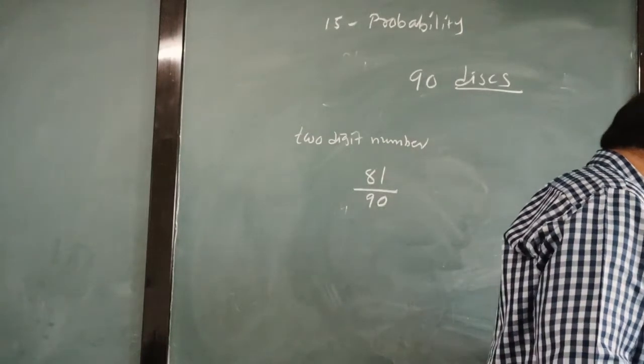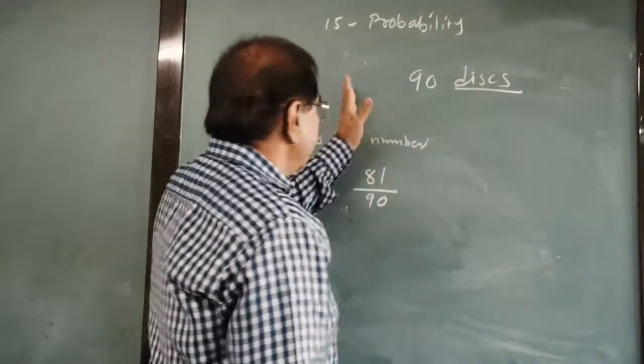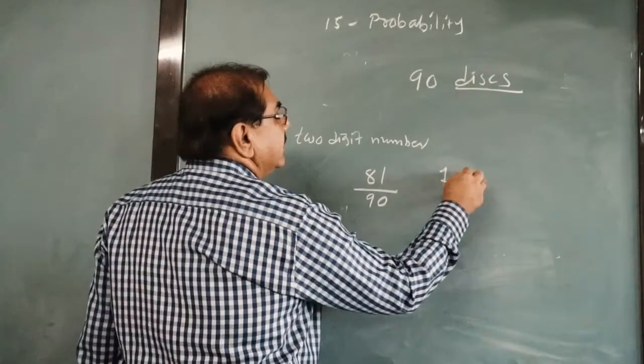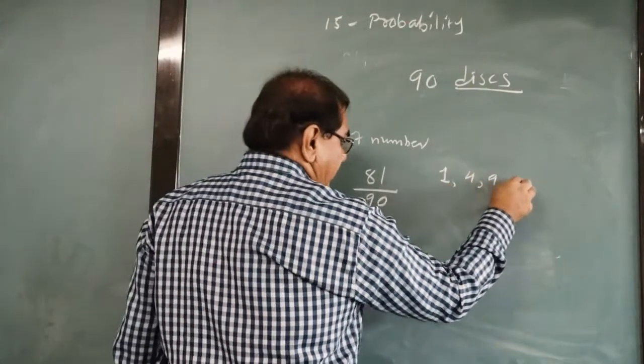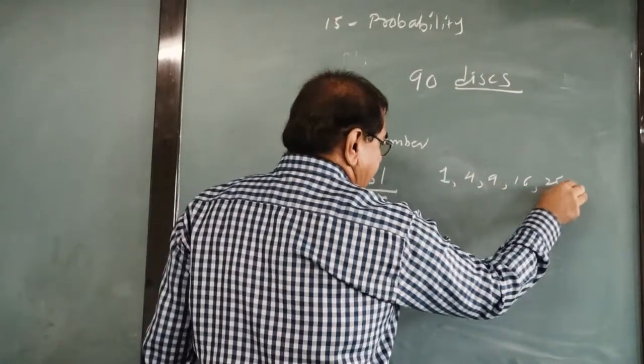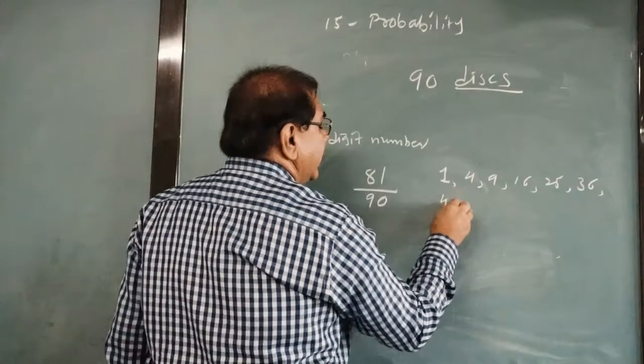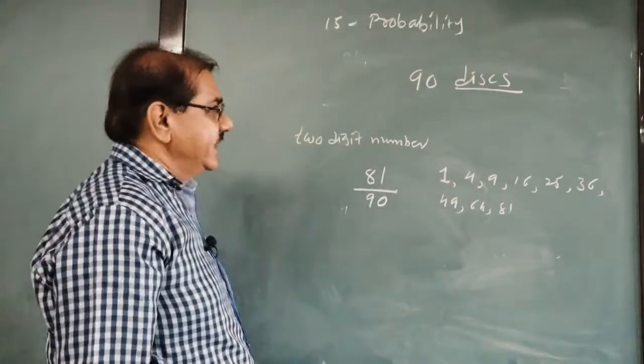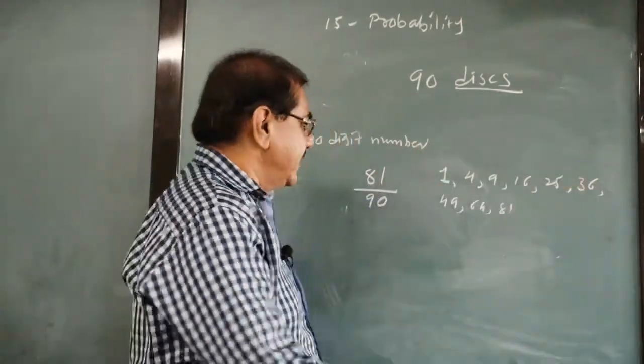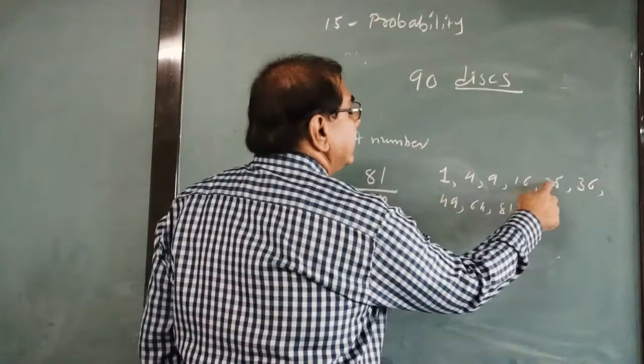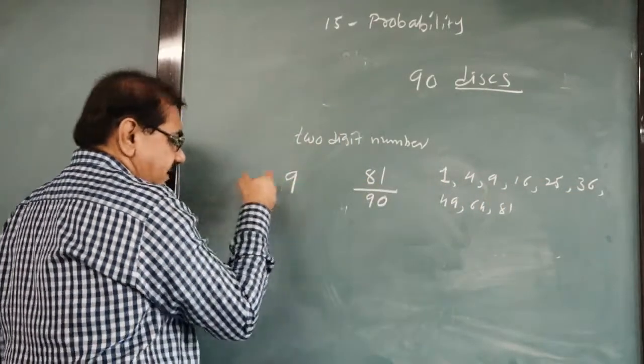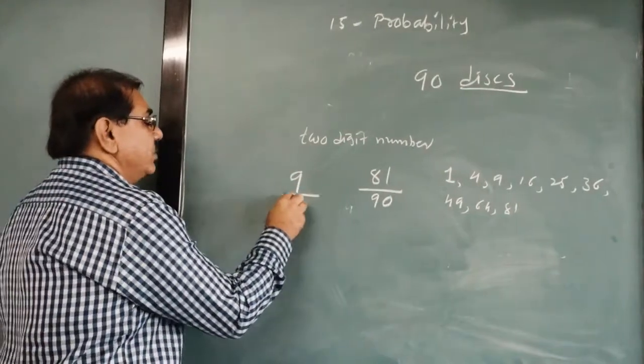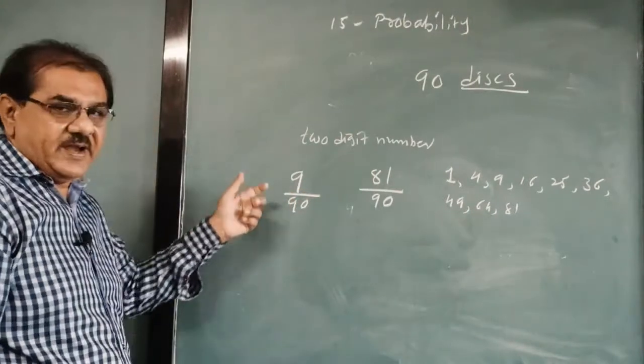Second one, a perfect square number. From 1 to 90, how many are perfect square numbers? 1, 2 square is 4, 3 square is 9, 4 square is 16, 5 square 25, 6 square 36, 7 square 49, 8 square 64, 9 square 81, and 10 square is 100. So it is not calculated. So these are the perfect square numbers. So 1, 2, 3, 4, 5, 6, 7, 8, 9. So it is 9 are the outcomes favorable to the event, and it should be a perfect square number out of 90. Simplify it and get the answer.